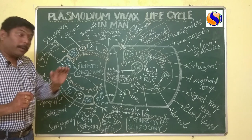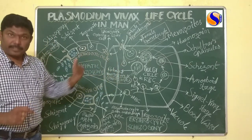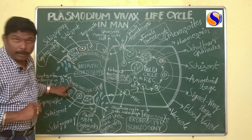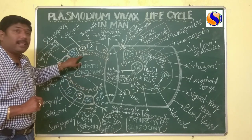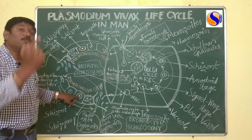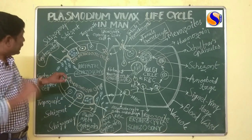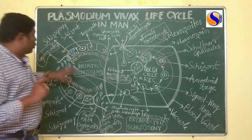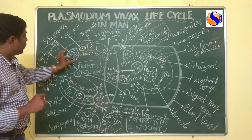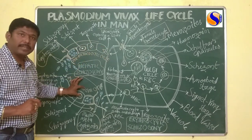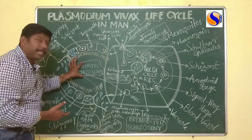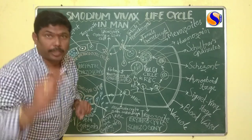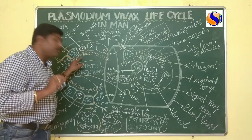Erythro means RBC — so pre-erythrocytic means before entering into the RBC, and exo-erythrocytic means outside the RBC. Both cycles take place outside the RBC, that means in the liver cell. This total Hepatic Schizogony was explained by Garnham and Schott.